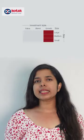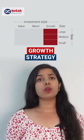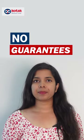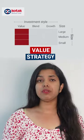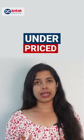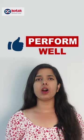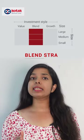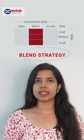Now let's understand this chart in detail. Growth strategy follows the approach of buying stocks that have shown above-average profit growth in previous years and are likely to continue generating high levels of profit growth, though there are no guarantees. Whereas value strategy follows the approach of buying stocks that are currently underpriced but yet have strong fundamentals and can perform well in the long term. And when fund managers use both of these strategies, it is called blend strategy or blend style of investing.